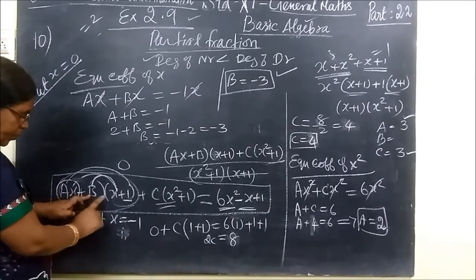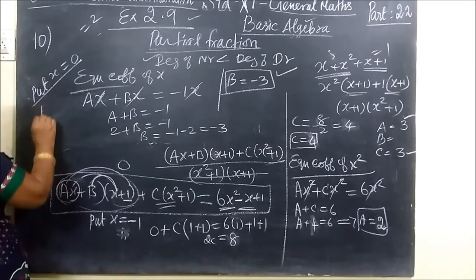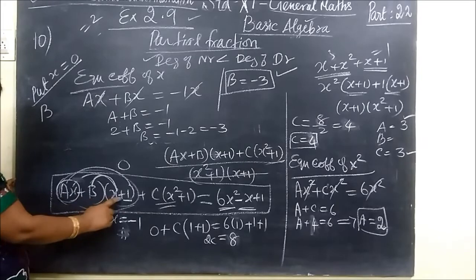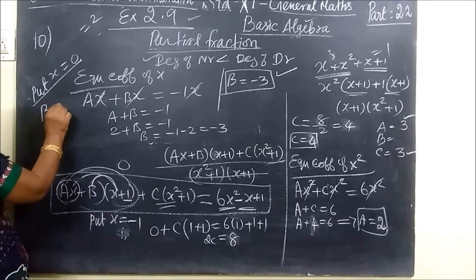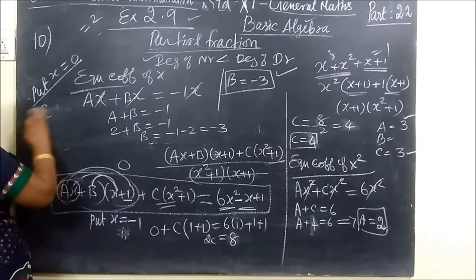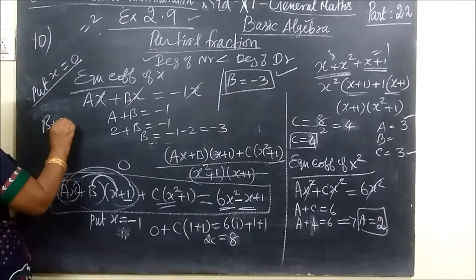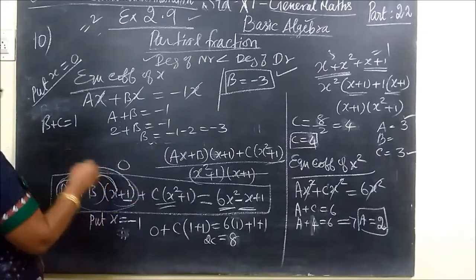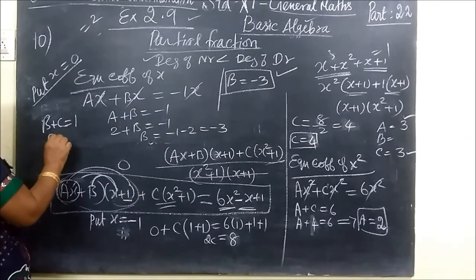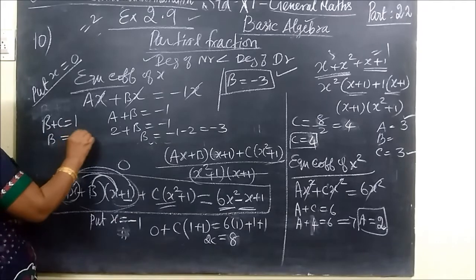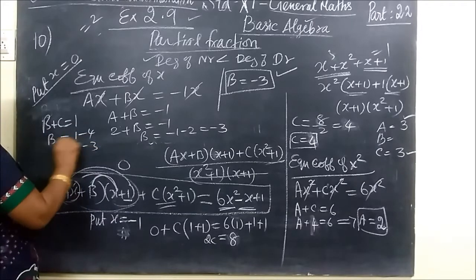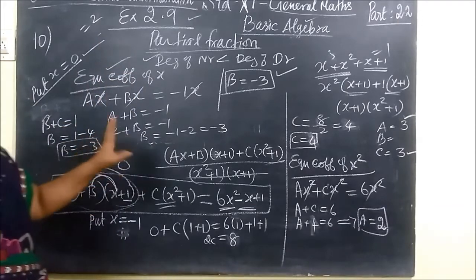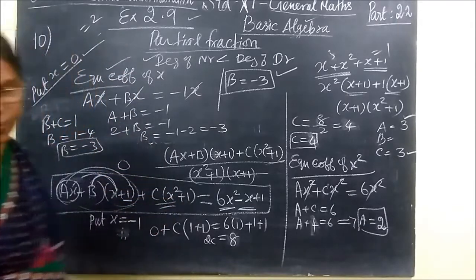If you find it difficult here you can write put x equal to 0. So if you write put x equal to 0, this is 0, this is 0. So B plus C equal to 1. C value 4, so B plus 4, B equal to minus 4, so minus 3. Same answer you got. Either method you can use, this method or this method. If you can do some more value with your substitute.